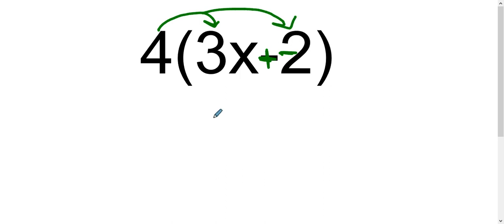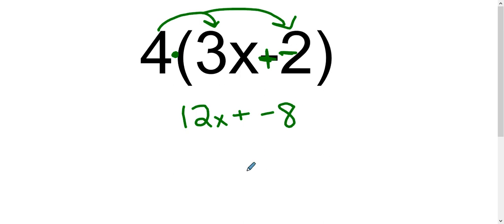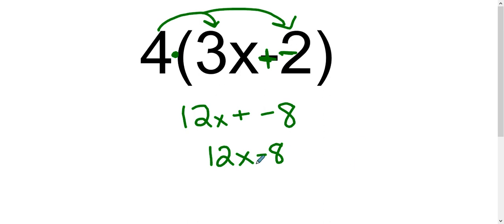Then I can distribute, and remember this 4 gets distributed to everything inside the parentheses. Distribution is multiplication, so we are actually multiplying the 4 times each of these terms inside. So 4 times 3x makes 12x, and 4 times a negative 2 makes a negative 8 — which simplifies to 12x minus 8. Double check that you can't combine any like terms. Here I have a variable of x and here I have a constant — they are not like terms.